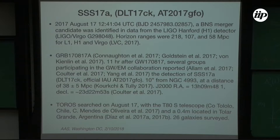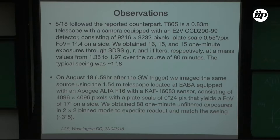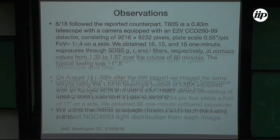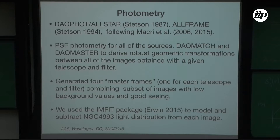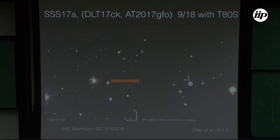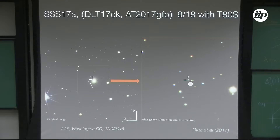We performed PSF photometry for all sources, generated a mass of frames, and one of the most important things we did to get a very good estimate of the background was to subtract the galaxy. That's not an easy task. Subtracting the galaxy allows you to see the kilonova very clearly in the residual image.